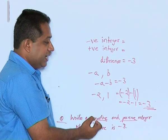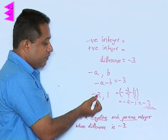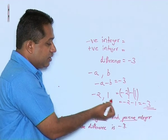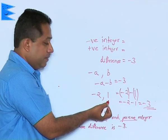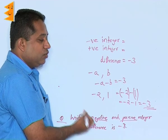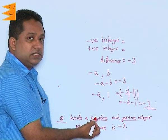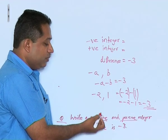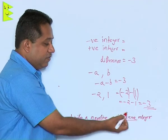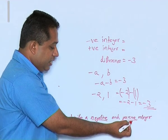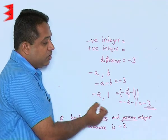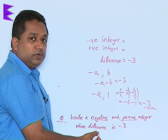We can say the negative number found is minus 2 and the positive integer is positive 1. As noted before, in all these types of questions there are no fixed answers — there are infinitely many possibilities where you could get one negative and one positive integer whose difference is minus 3. This is only one of the solutions which is possible.